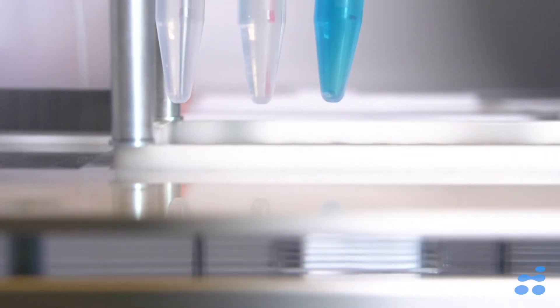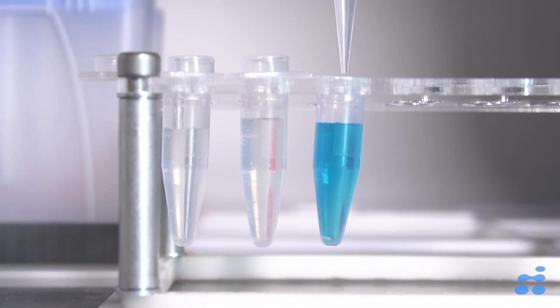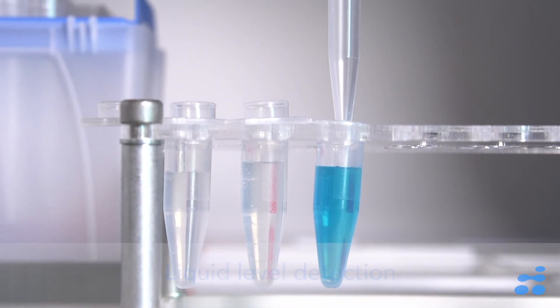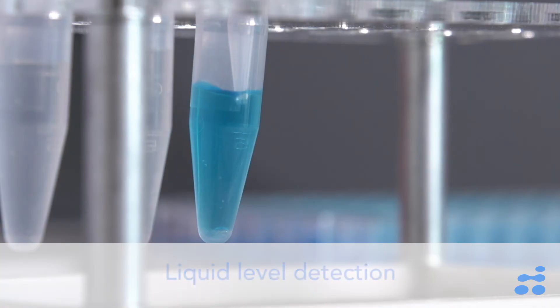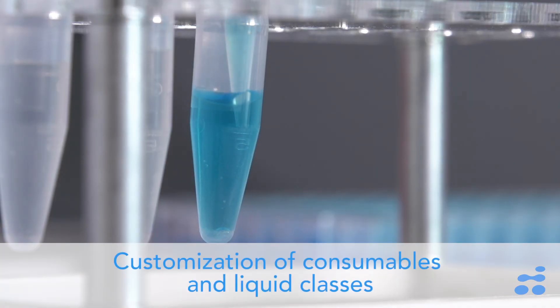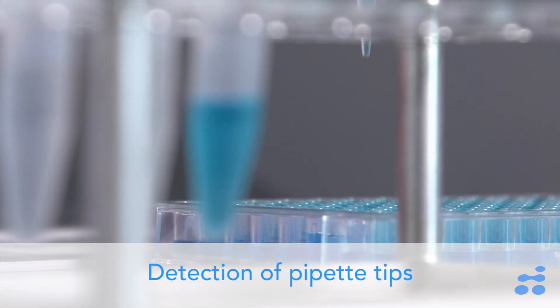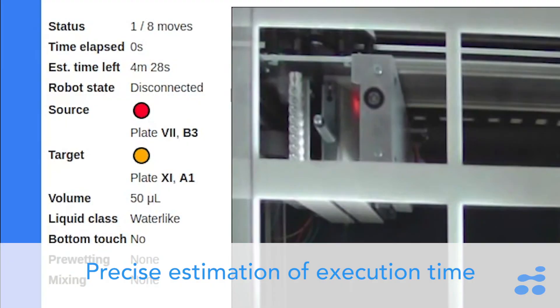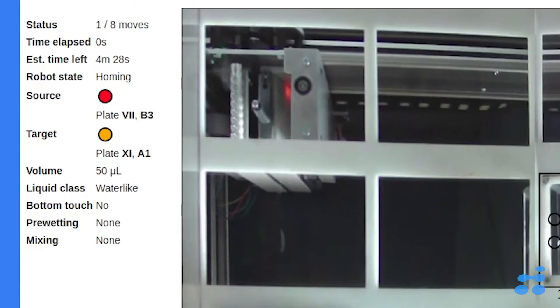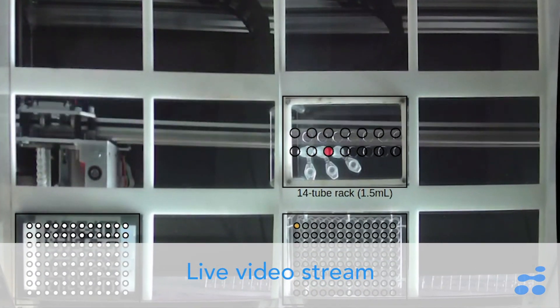It's a very easy robot to use. Despite being the easiest robot to use on the market, it still has a wide range of features, including liquid level detection, customization of consumables and liquid classes, detection of pipette tips, precise estimation of execution time, and live video stream.